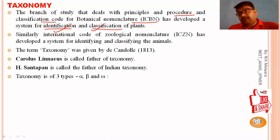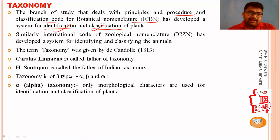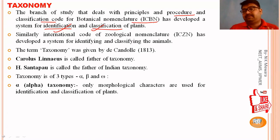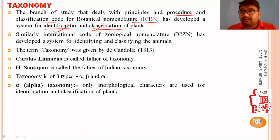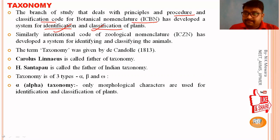Taxonomy is generally divided into three phases. First is alpha taxonomy, in which only morphological characteristics are used for identification and classification of plants — you simply observe the morphological features to group plants.